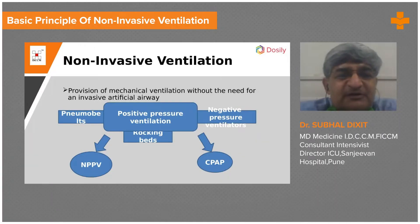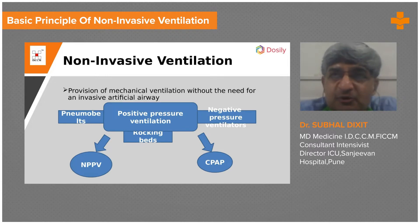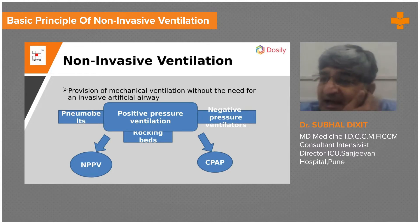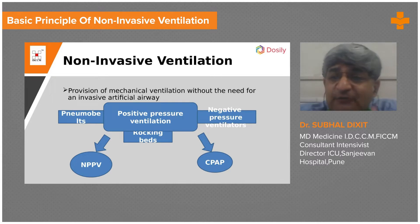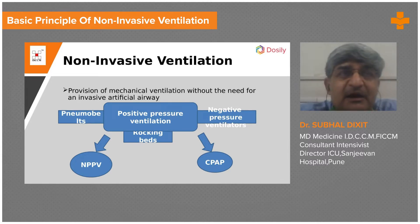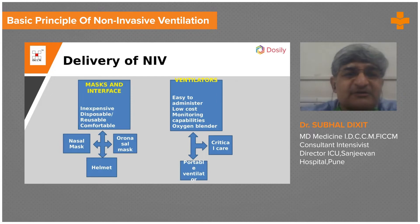We did see that non-invasive mechanical ventilation can be given in two forms: one is continuous positive airway pressure (CPAP), where it is a positive pressure maintained throughout the respiratory cycle of inspiration as well as expiration, and the second is the bi-level or non-invasive IPPV, where you have two levels of pressure applied — one during inspiration and one at the time of expiration.